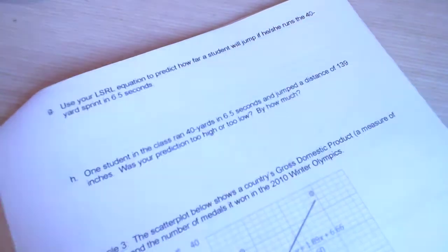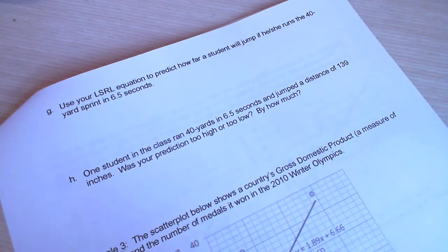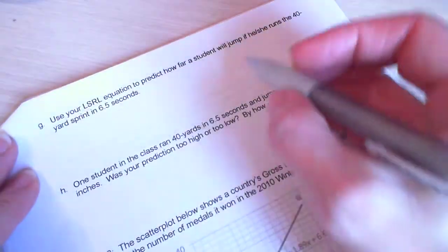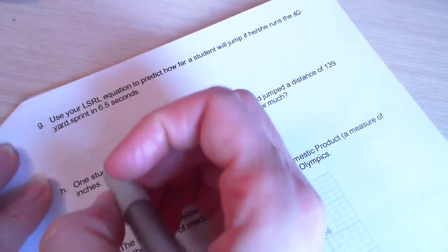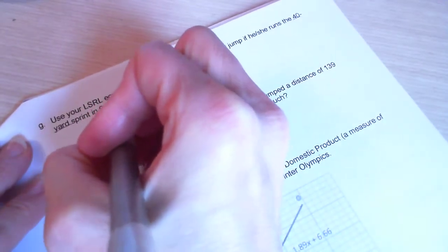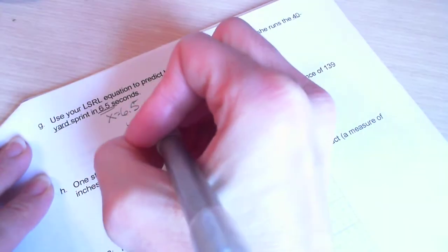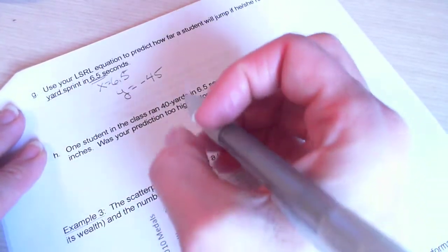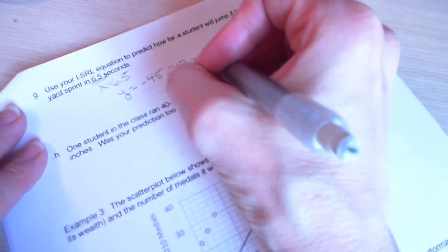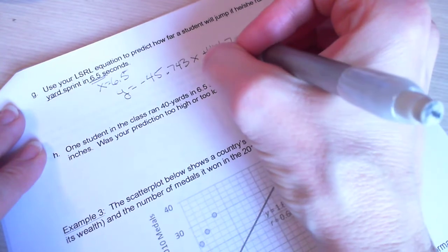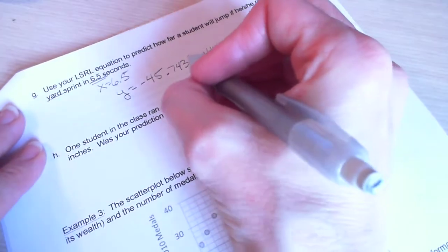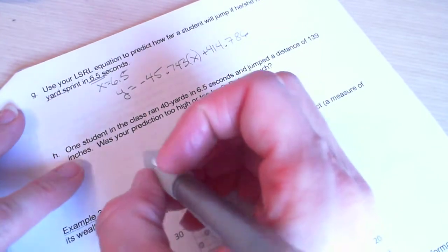Okay, part G says, use your least square regression equation to predict how far a student will jump if he or she runs a 40-yard sprint in 6.5 seconds. So, this means x equals 6.5. So, I want to take my equation, same one, slide it up there so you can see it, negative 45.743x plus 414.786.